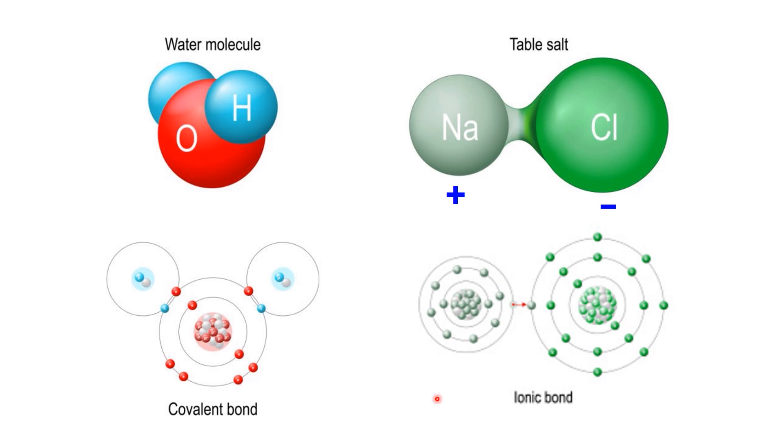Before we finish, let's quickly compare ionic bonds with covalent bonds. Both involve interactions between atoms, but they work in very different ways.